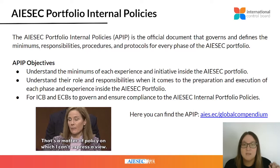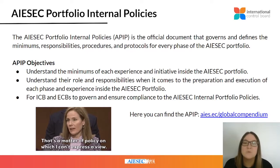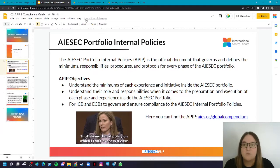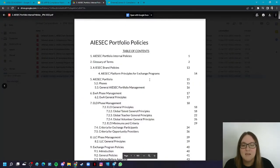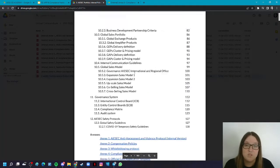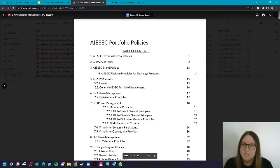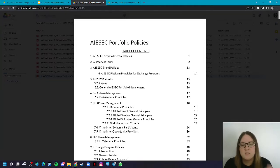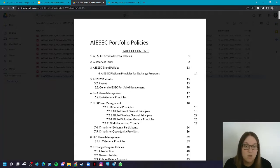I did put the link in here as well and it is honestly your Bible. The APIP is the most important document for ECBs and ICB, and it's very important that you check it out. If you open it you have the whole document — it is 150 pages, it is a lot, but it's very worth it to go through it. You don't need to know every single policy; it is more important that you understand where these things are located, so if we look for policies on GV, you understand where it is in the APIP.